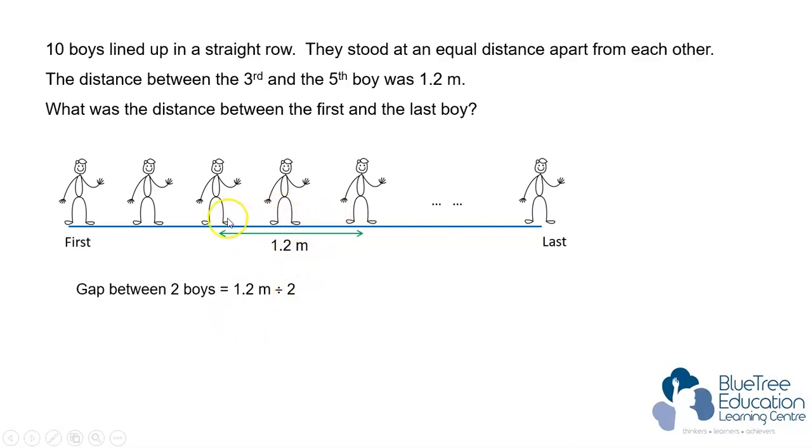To find the gap between two boys, we'll take 1.2 meters divided by 2, which gives you 0.6 meters.